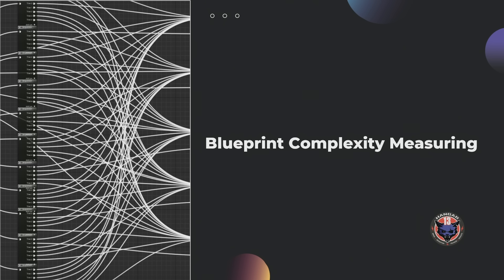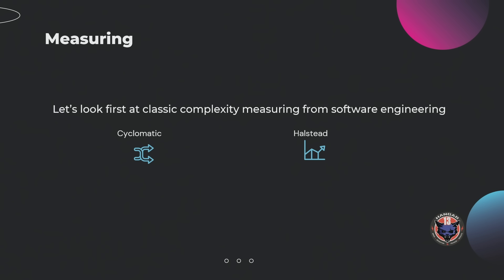What about the meat and bones — how would you write a validator for Blueprints? How would you reason about what you see visually as complex and teach the validator that that's the case? Let's look at some classic complexity measures out there in the software engineering field. We're going to look at cyclomatic complexity and a thing called Halstead complexity.